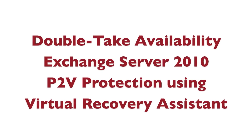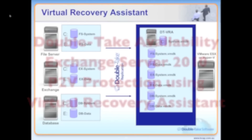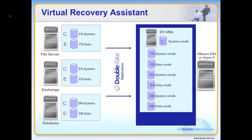Double Take Availability can use a method called Virtual Recovery Assistant to protect multiple production servers, either physical or virtual, by replicating directly to a pre-provisioned virtual machine on either ESX or Hyper-V.